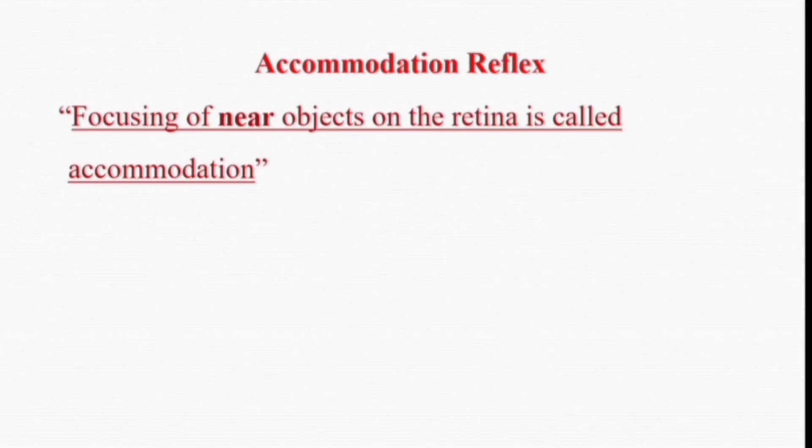What is accommodation? Basically, accommodation is a process by which we see objects which are close to our eye — objects which are very close or near our eye. So we can say that focusing of the near objects on the retina is called accommodation. In our body, this process occurs automatically by a reflex, so it is called accommodation reflex.